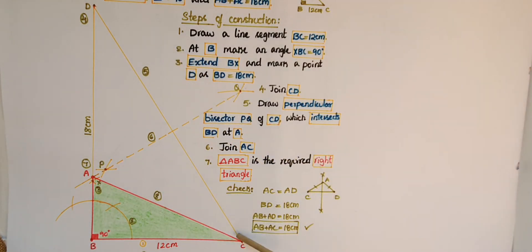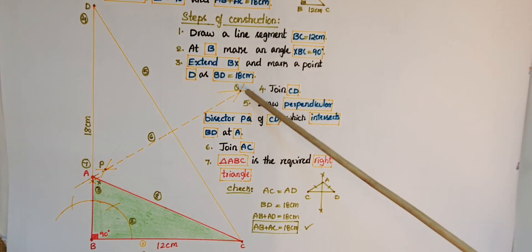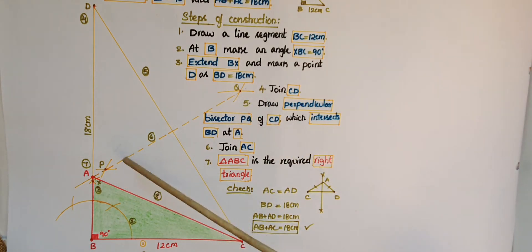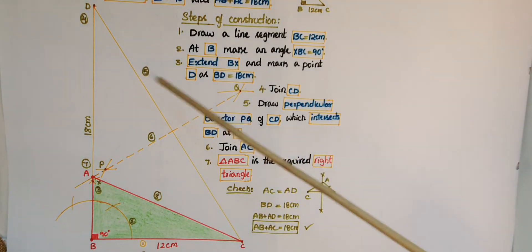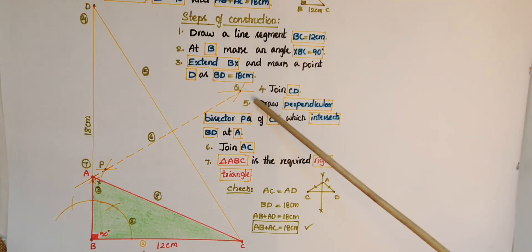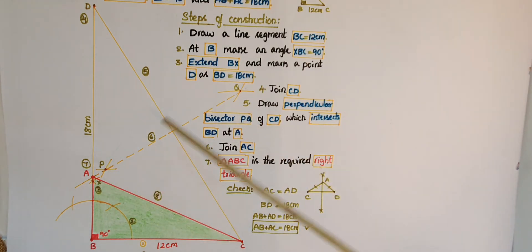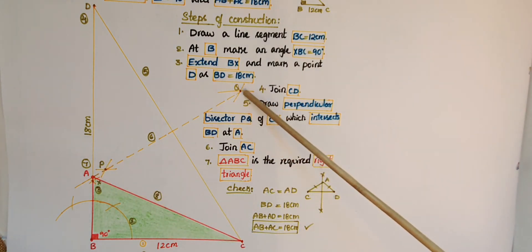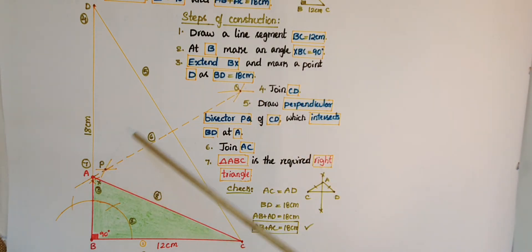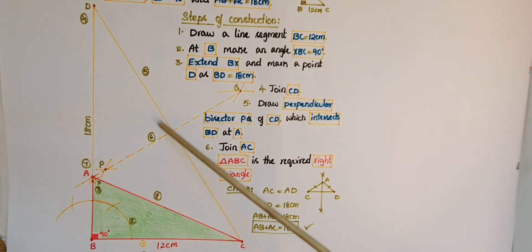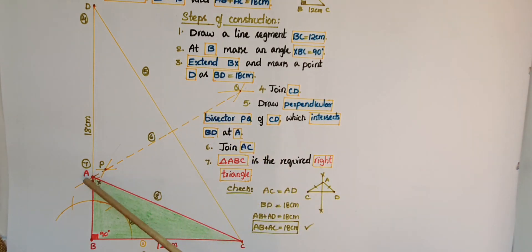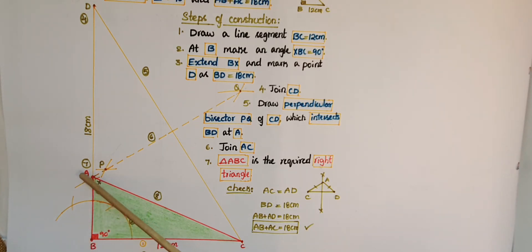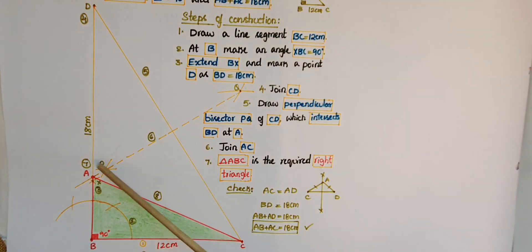Join D and C. Taking C as center, draw two arcs on either side of CD with radius more than half of CD. Taking D as center, draw two more arcs on either side with the same radius. Mark the two intersection points as P and Q, then join them to get the perpendicular bisector of CD. Extend this perpendicular bisector to meet BD at a point marked A. Join A and C. Triangle ABC is the required right triangle.